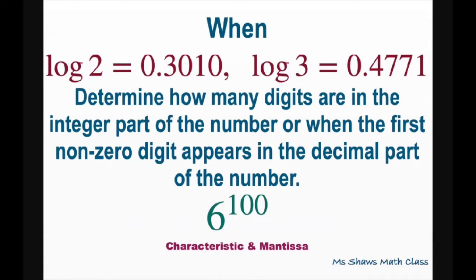Hi everyone. When we have log of 2 equals 0.3010 and log of 3 equals 0.4771, we're going to determine how many digits are in the integer part of the number, or when the first non-zero digit appears in the decimal part of the number.